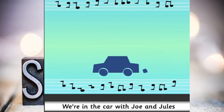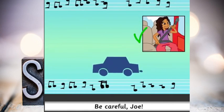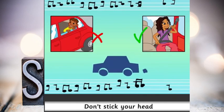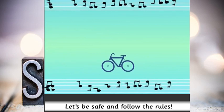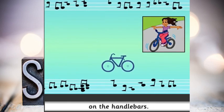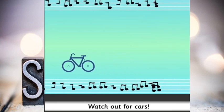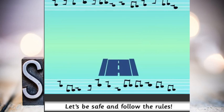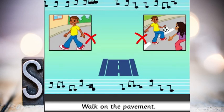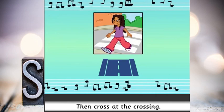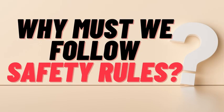We're in the car with Joe and Jules, let's be safe and follow the rules. Fasten your seat belt, be careful Joe. Don't stick your head out of the window. We're on our bikes with Joe and Jules, let's be safe and follow the rules. Keep both hands on the handlebars, wear a helmet, watch out for cars. We're in the street with Joe and Jules, let's be safe and follow the rules. Don't play in the street, walk on the pavement, look both ways, then cross at the crossing.